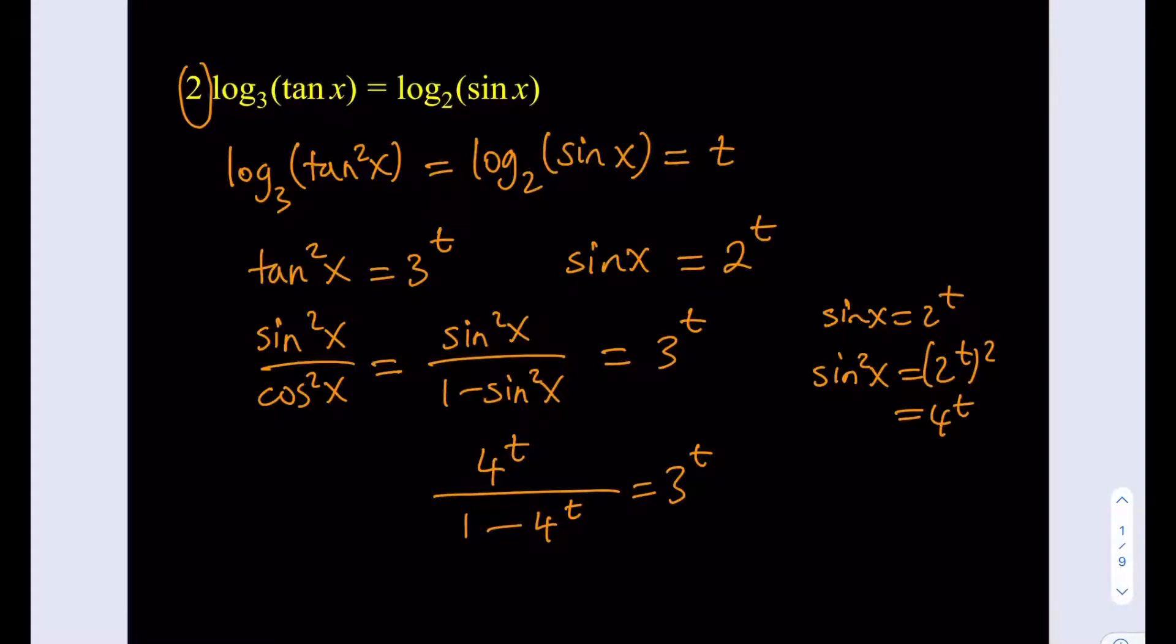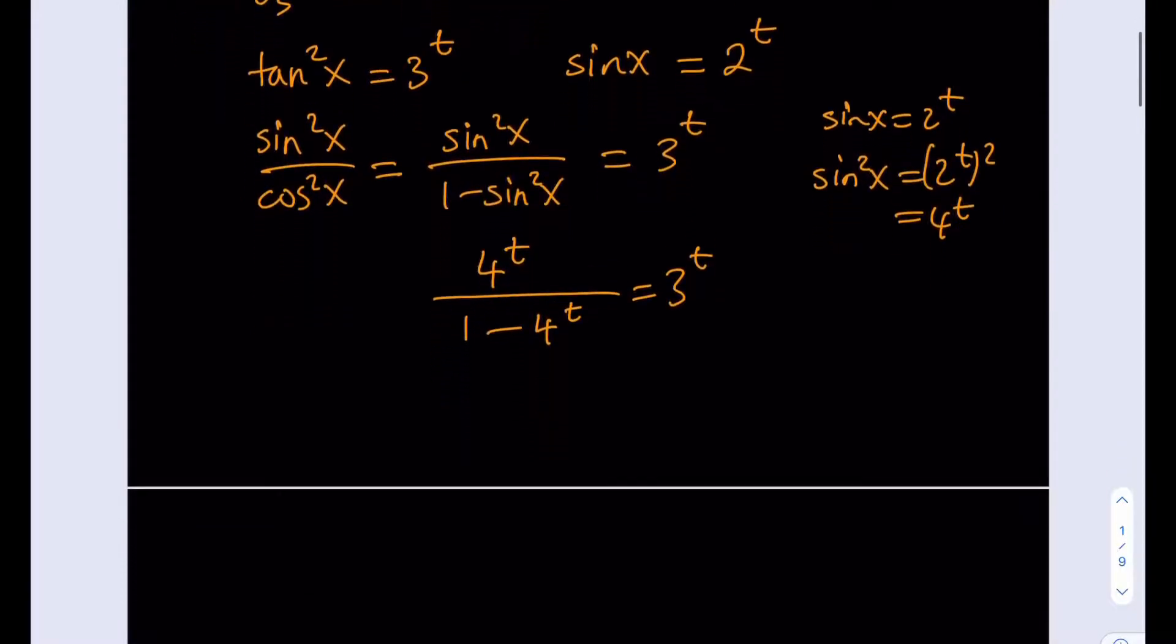Now, we do have an equation in one variable, which is pretty good. Even though the bases are different, we're going to take care of this. So let's go ahead and cross-multiply this expression first. So we're going to be getting 4 to the power t equals 3 to the power t multiplied by 1 minus 4 to the power t times 3 to the power t, which is going to be 12 to the power t.